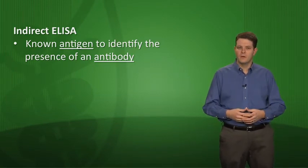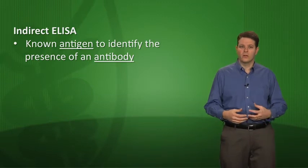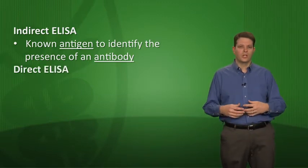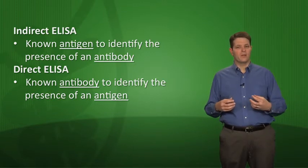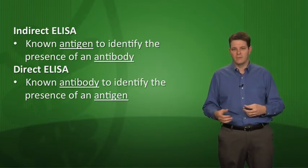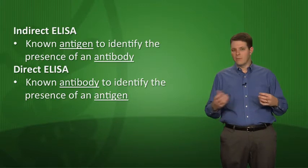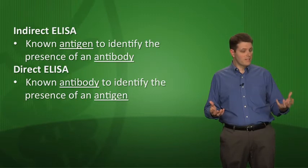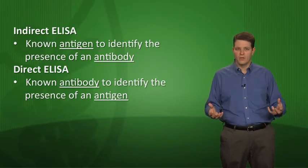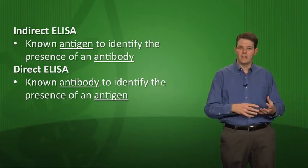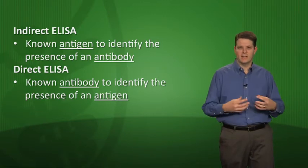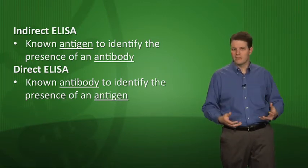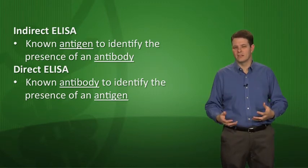The other way to do the ELISA is to look for the antigen, which is called a direct ELISA. So you're using a known antibody to identify the presence of an antigen in the patient's blood. So you have a vial of antibodies over here and you have a sample from the patient, whether it's blood or biopsy tissue or whatever. You want to know if that sample contains a certain antigen. So you wash the sample with those antibodies, and again, if there's a color change, that indicates that the antigen was present in the sample.